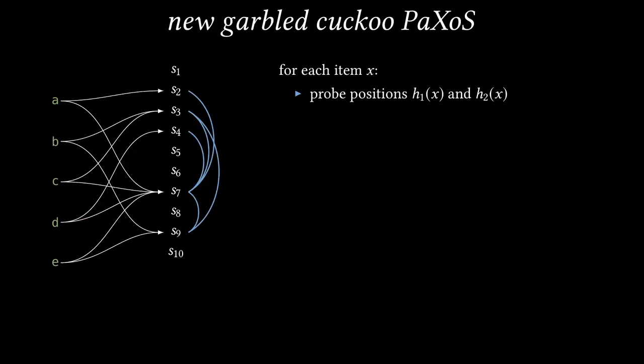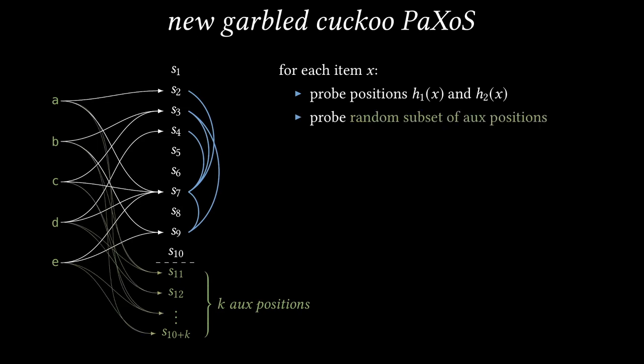To cope with such cycles, we're going to add k extra components to the Paxos vector. I'll call these extra components auxiliary positions. Now each item x is secret shared not only across the two positions h1(x) and h2(x), but also across a random subset of those auxiliary positions. For example, item a is meant to be secret shared to position s2, s7, and a random collection of the auxiliary positions.